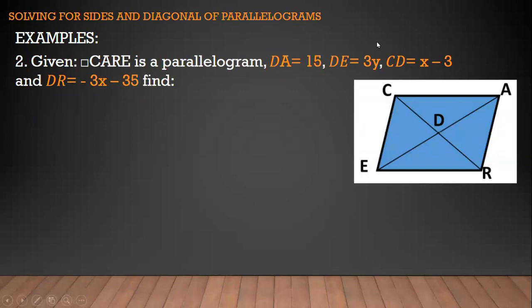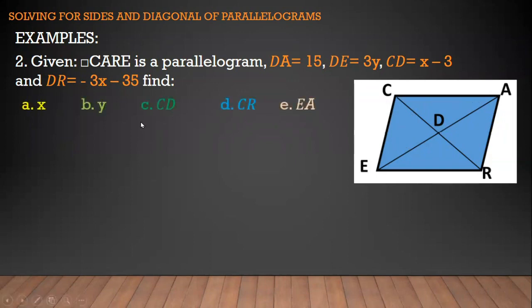Let's have example number 2. We have the given parallelogram here. The measure of segment DA is equal to 15, segment DE is equal to 3y, segment CD is equal to x minus 3, and segment DR is equal to negative 3x minus 35. Find the value of x, y, segment CD, segment CR, and segment EA.